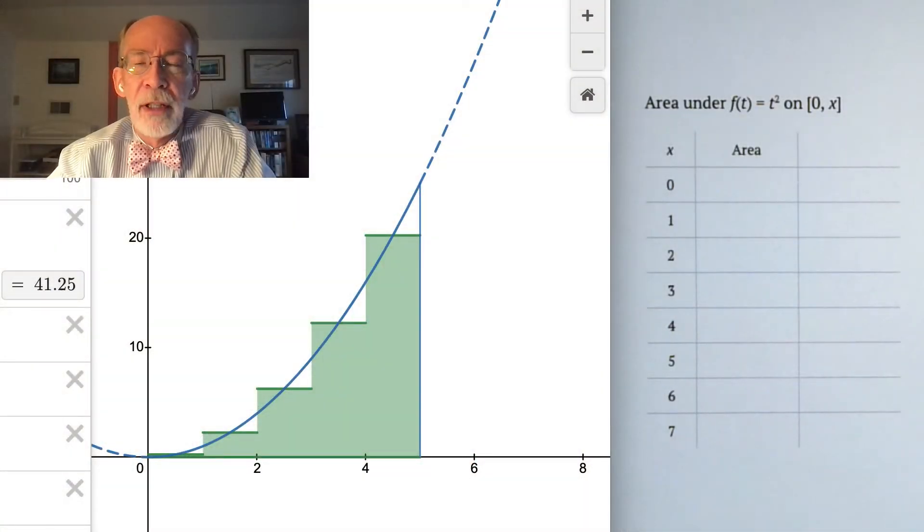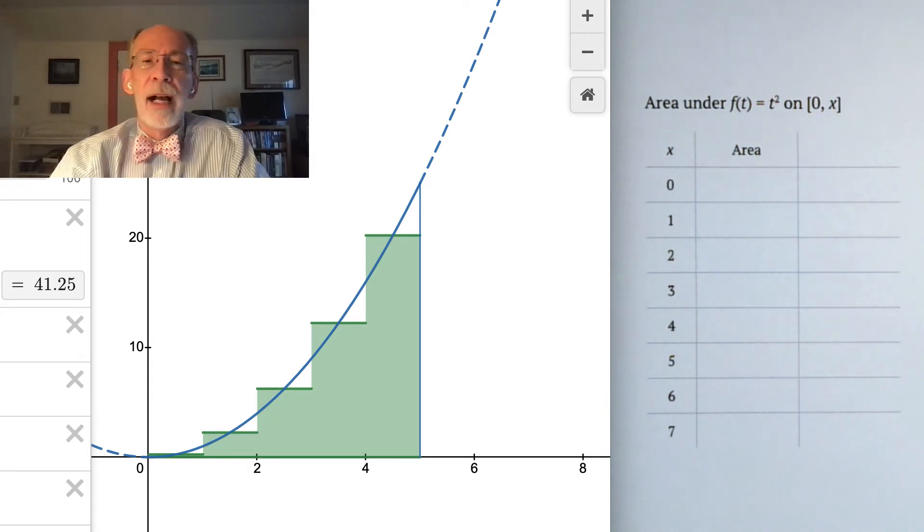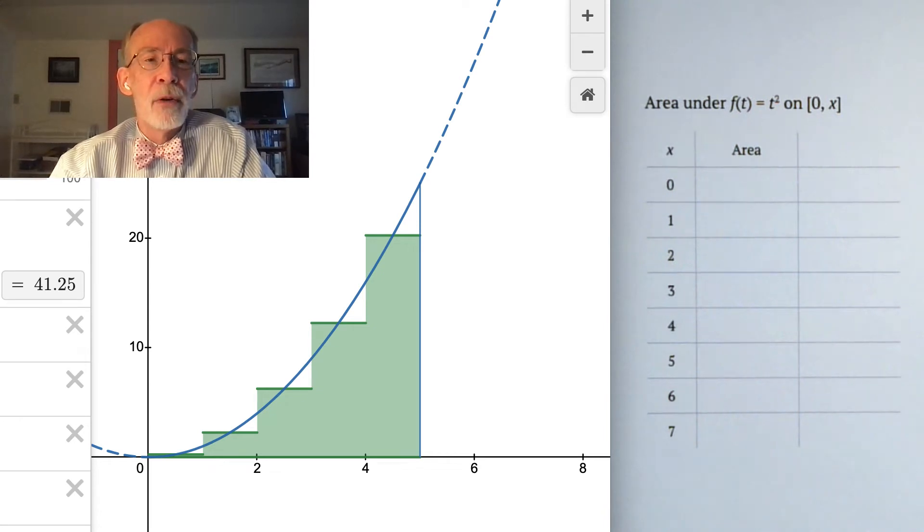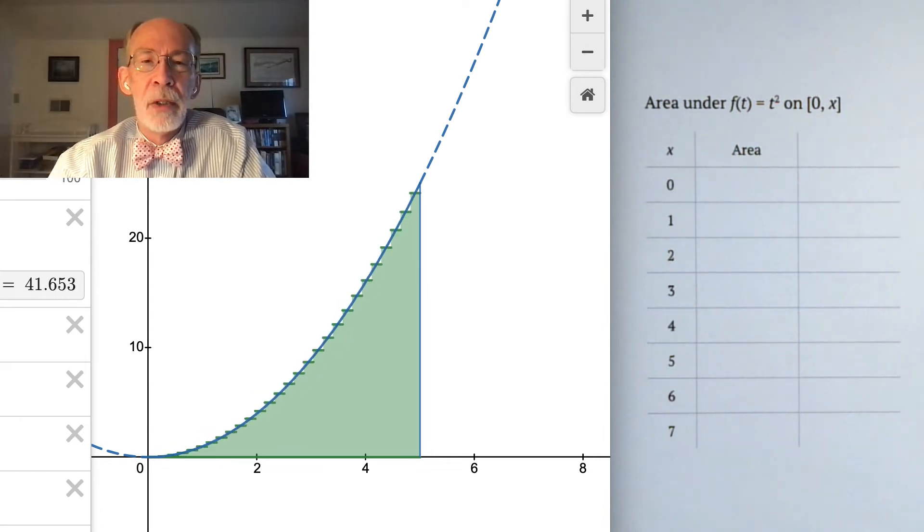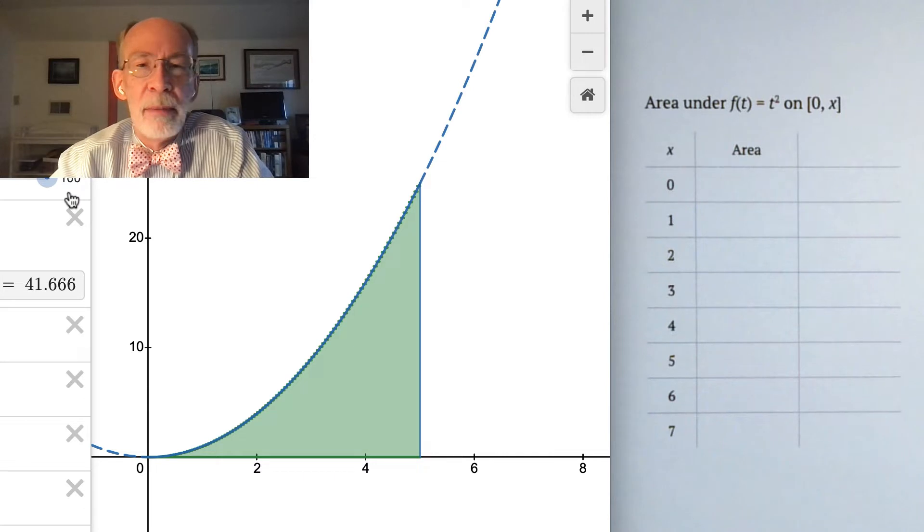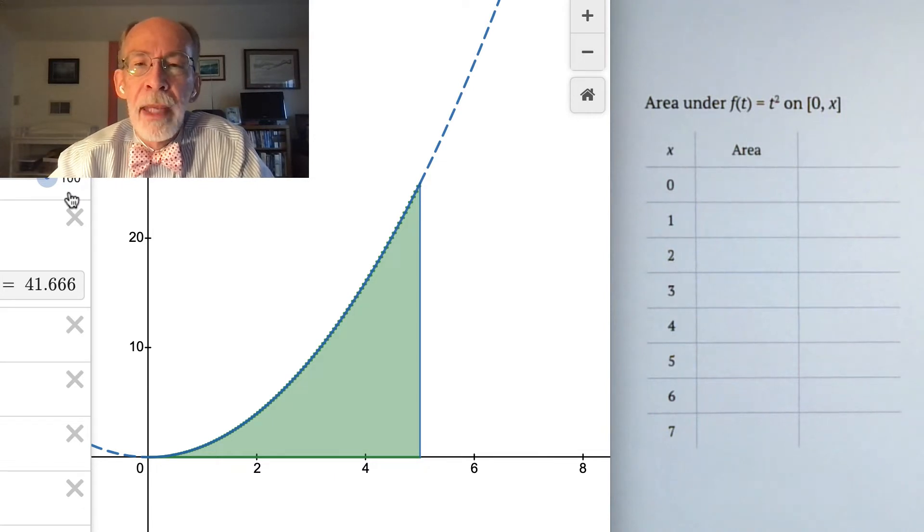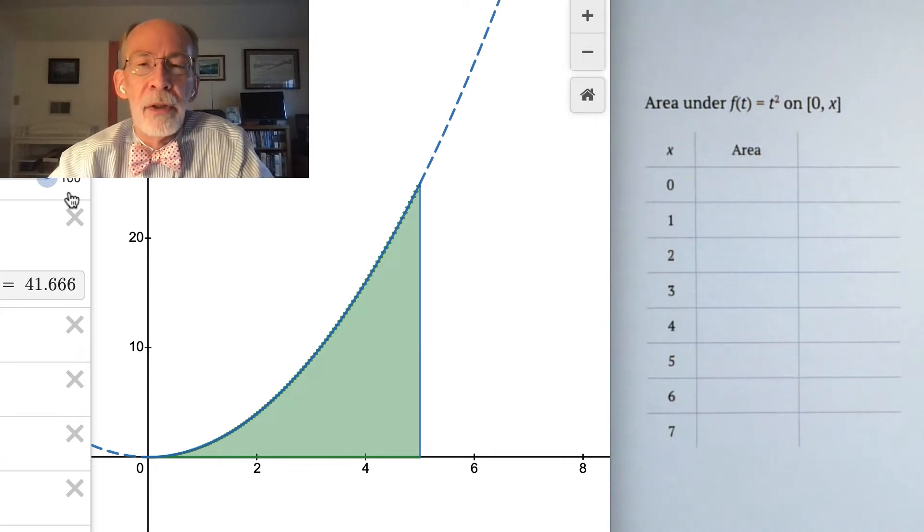So I have here the graph of a function f of t equals t squared. And we might be interested in the area between that graph and the x-axis from say 0 to 5. And we might approximate that with a Riemann sum using midpoint x sub k stars. And that's what you see here for five subintervals. If we increase the number of subintervals, we get a better and better approximation.